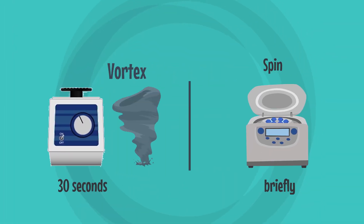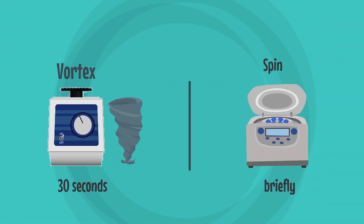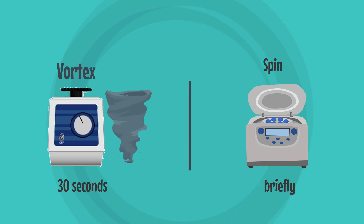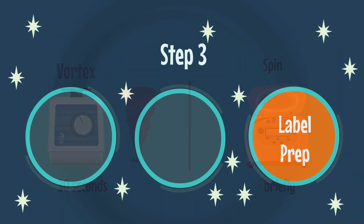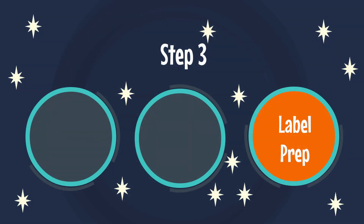Vortex for 30 seconds and spin briefly. Step 3: Label Prep.